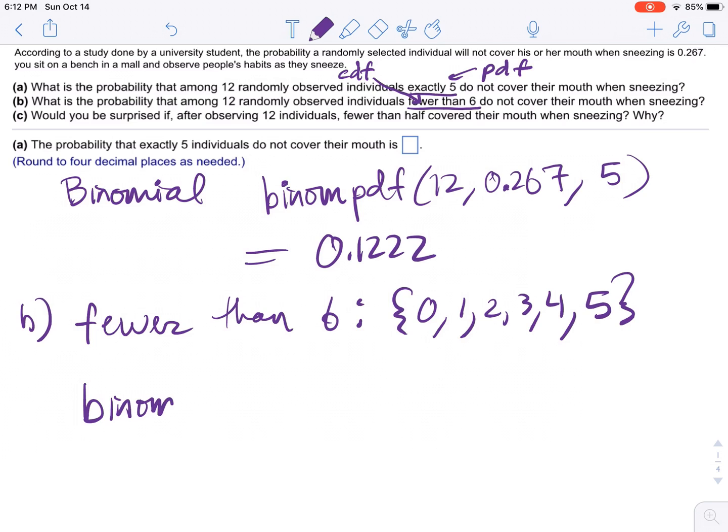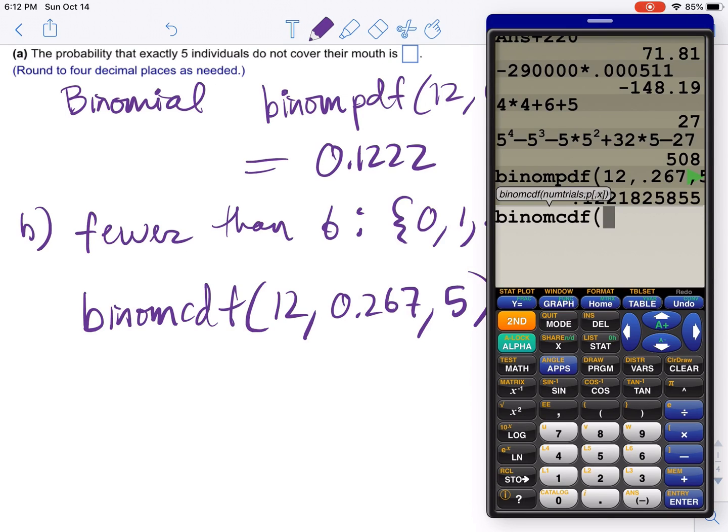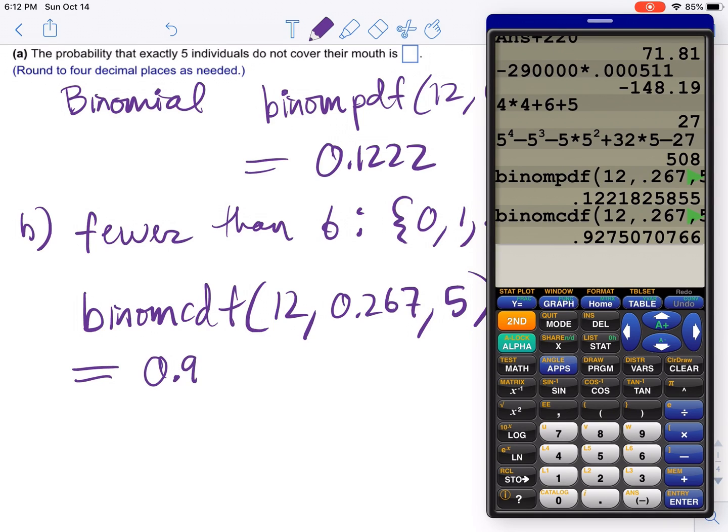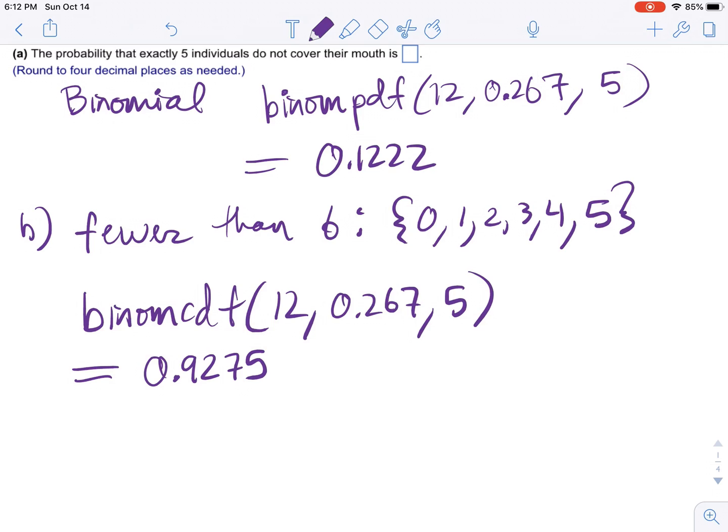Alright. Here it is. Binom CDF. Notice the C. We're going to put 12. That's N. Then we're going to put the probability. And then 5, what you want to go less than or equal to. So, second distribution binom CDF. Notice how it wants me to put in number of trials probability then X. So, 12, 0.267 and 5. This probability is much higher. Wow. That's interesting. Do you know why that is? Put this down first. That's because this probability is finding the sum of the binomial PDFs of 0, 1, 2, 3, 4, and 5. Whereas the binomial PDF, it only found it for the number 5. The probability of getting exactly seeing 5 people that don't cover their mouth.